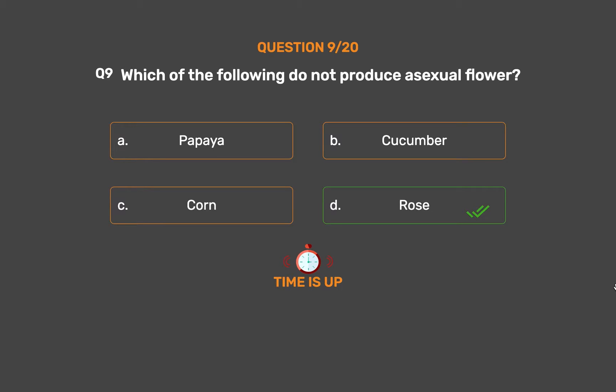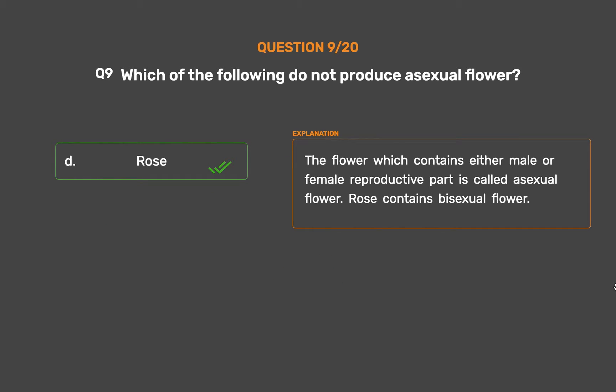The flower which contains either only male or only female reproductive parts is called a unisexual flower. Rose contains a bisexual flower.